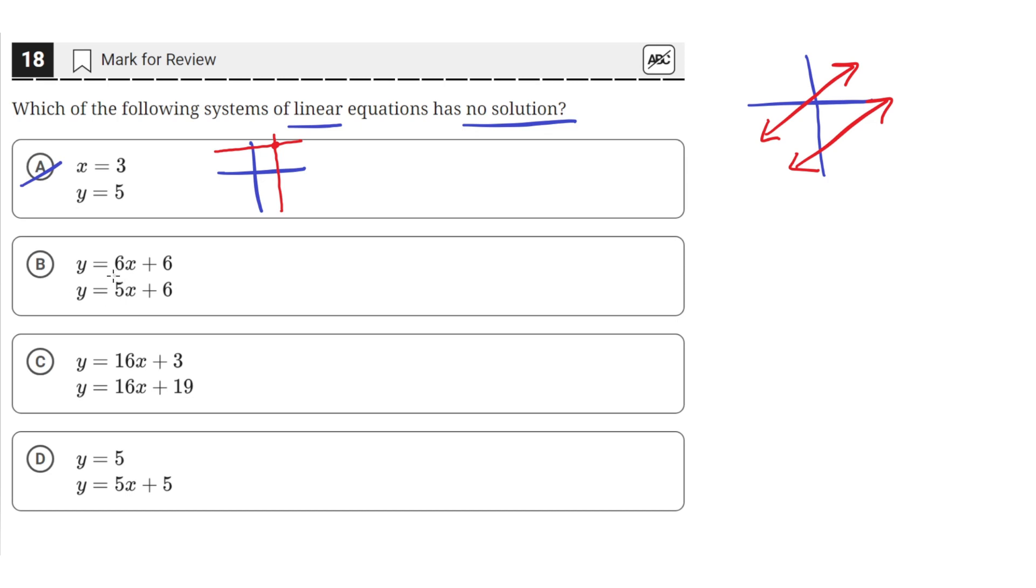Then here, these two lines, they have different slopes. This one has a slope of 6, and this one has a slope of 5. So that means they are not parallel lines, so B is incorrect.